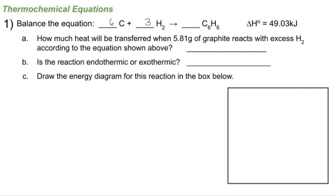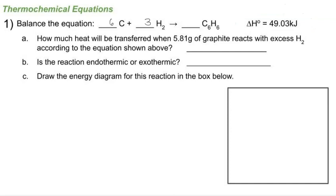Now I have a balanced equation, so I can answer the question: how much heat will be transferred when 5.81 grams of graphite react with an excess of H₂? I'll use dimensional analysis. Every time six moles of graphite react with excess hydrogen, I need an energy input of 49.03 kilojoules — that's a positive delta H value, so this is an endothermic reaction. Part B: endothermic, because the delta H value is positive.